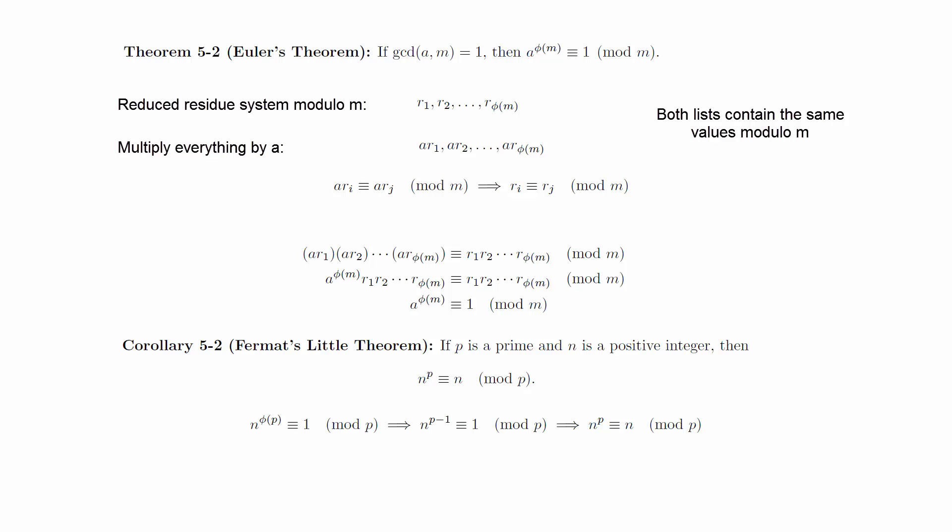If the GCD of n and p is not 1, then n is a multiple of p and both sides of the equivalence are 0. In either case, the congruence holds.